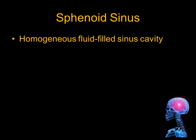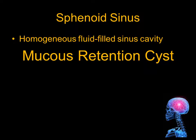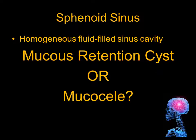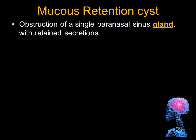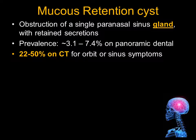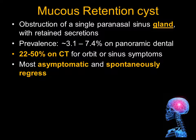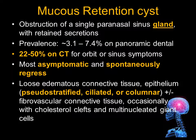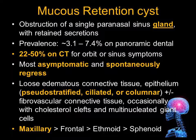This lesion is a homogeneous, fluid-filled sinus cavity. Is this a mucous retention cyst, or is it a mucocele? This is a very common, confusing question. A mucous retention cyst is obstruction of a single paranasal sinus gland with retained secretions. The prevalence is a little bit less than 10% on panoramic dental films, but up to 50% on CT scans done for orbit or sinus symptoms. Most mucous retention cysts are asymptomatic and spontaneously regress. They are typically lined by respiratory epithelium, which may become modified.